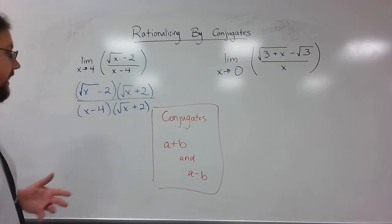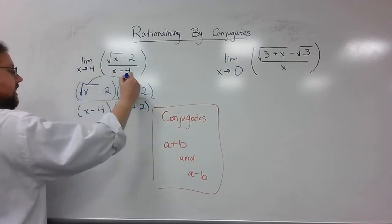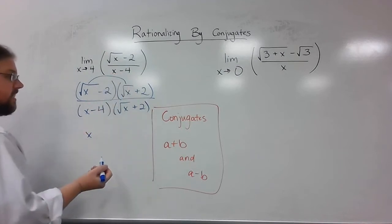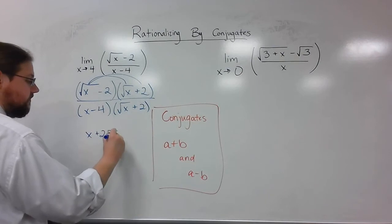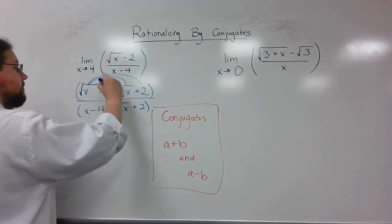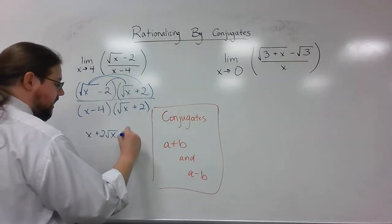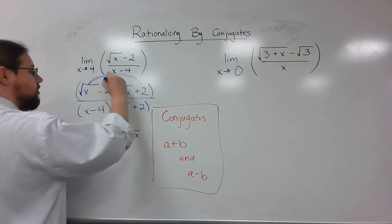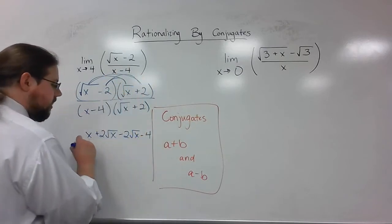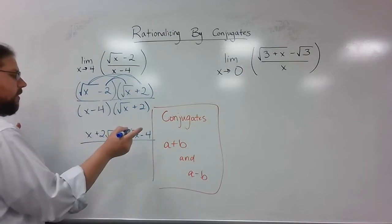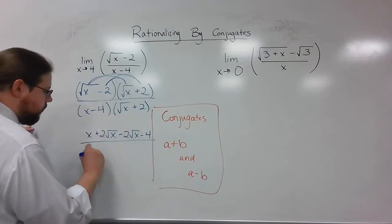So let's see what happens when I multiply now. So I'm going to do the square root of x times the square root of x, which is just going to turn into x. I'm going to do the square root of x times 2, which is 2 times the square root of x. I'm going to do negative 2 times the square root of x, which is minus 2 square roots of x. And I'm going to do negative 2 times positive 2, which is going to make negative 4. On the bottom, I'm going to go ahead and leave it alone. You'll see why in a second.